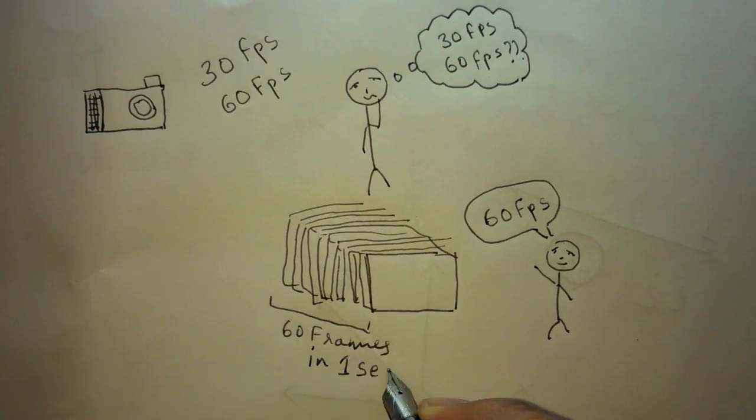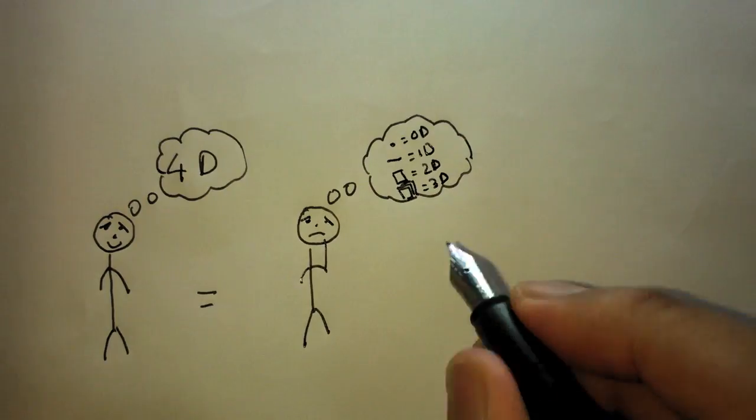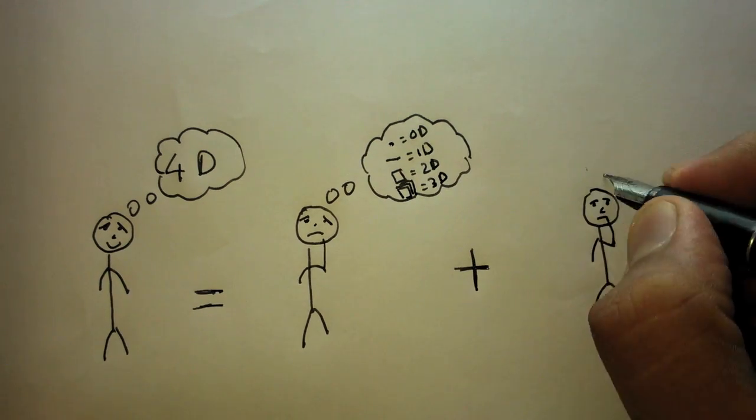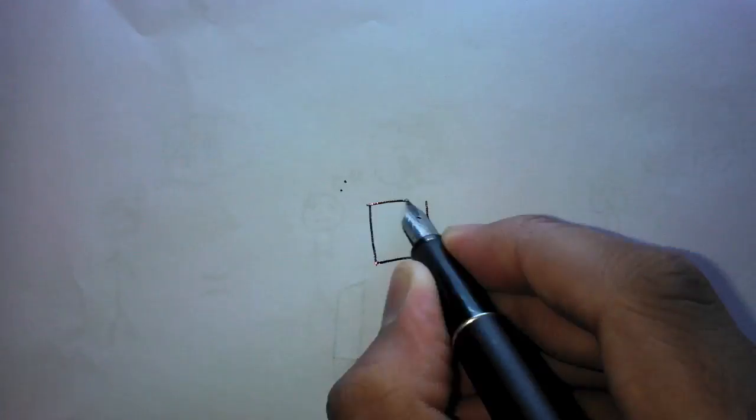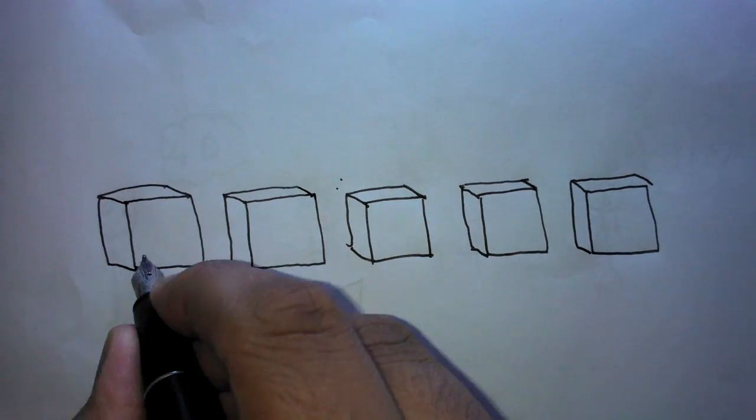Now we can better understand four dimensions by combining the two ideas. Let's take five three dimensions. Each dimension shows a body moving in space. Here each of them is comparable to frames in frame per second.